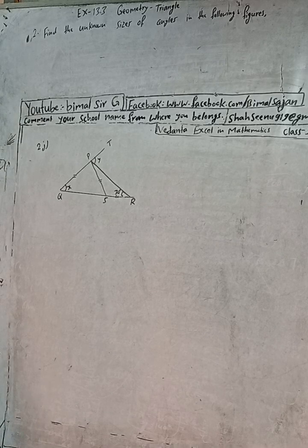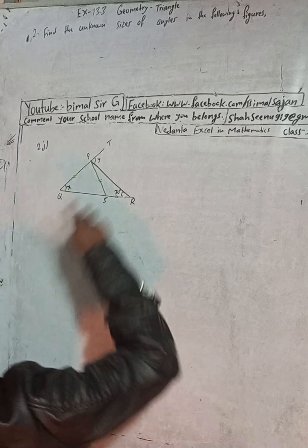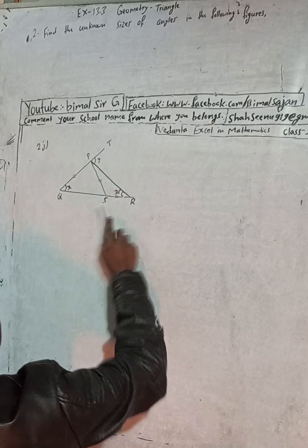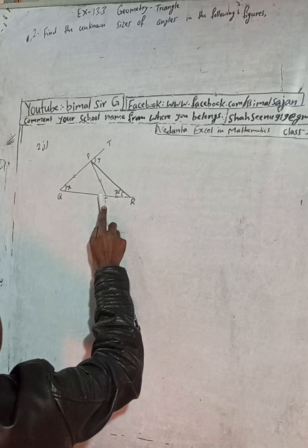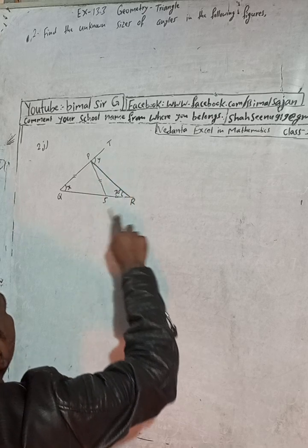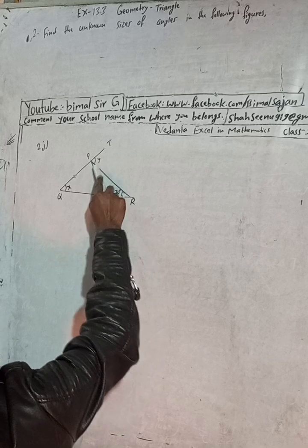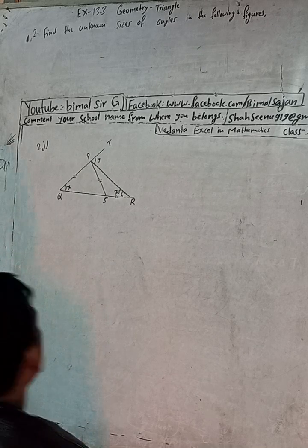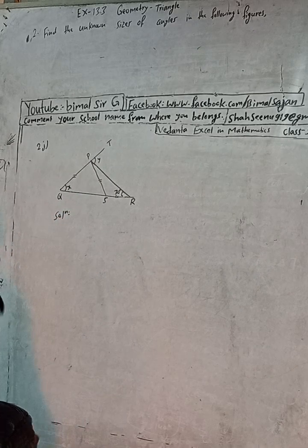This is question number 2J. In this figure, you can see that PQ and PS, these two sides are equal, which means this is an isosceles triangle, and the angle here is X. In the other triangle PSR, it is also isosceles because its two sides are equal, and this angle is 30 degrees, and this is also 30 degrees.